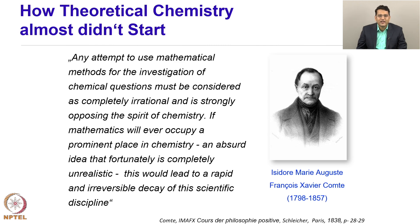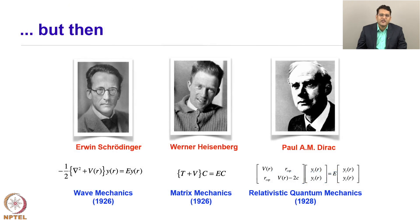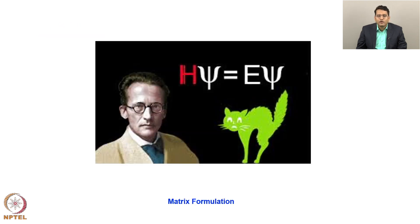If that were true, then what are we going to do in this course? Well, he was proven wrong very soon by three pioneers: Erwin Schrödinger developed wave mechanics, Werner Heisenberg developed matrix mechanics, and Paul A. M. Dirac married general relativity with the theories of quantum mechanics. Although we talk of the Schrödinger equation, what we actually solve on a computer is closer to the matrix formulation of Heisenberg.